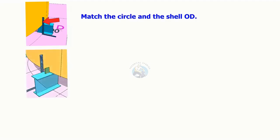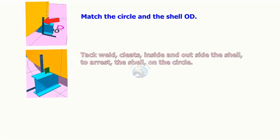Match the circle and the shell outer diameter. Tack weld cleats inside and outside the shell to arrest the shell on the circle.